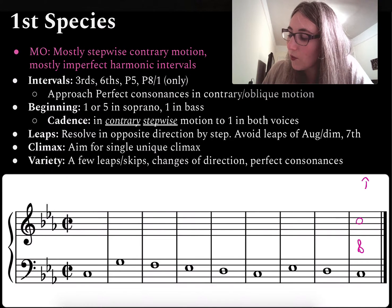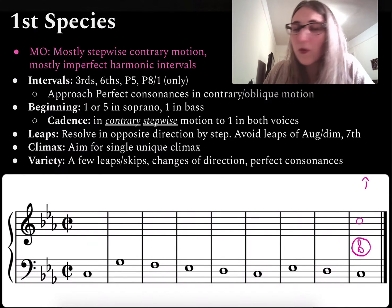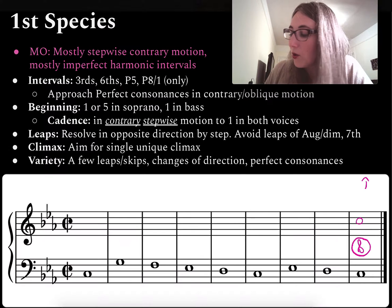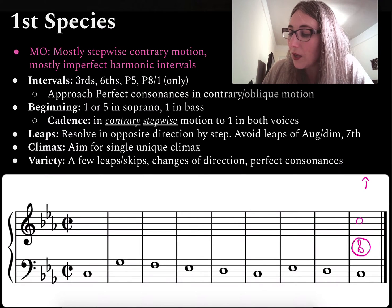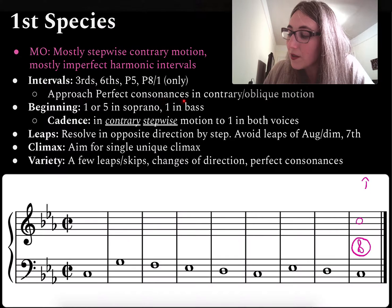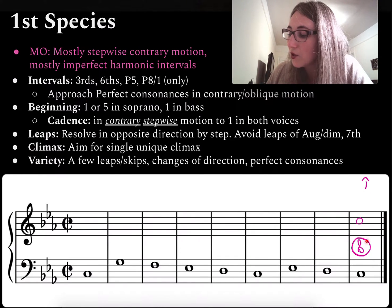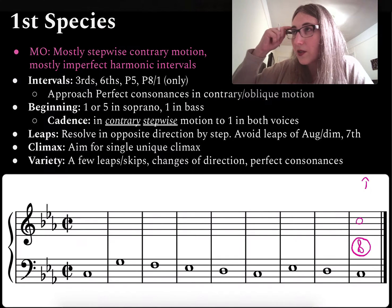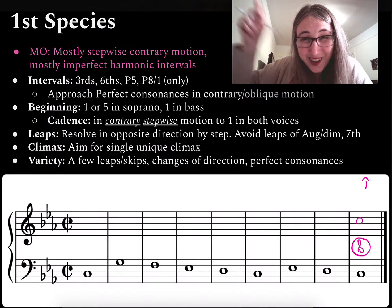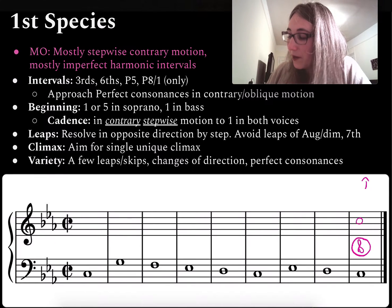As a general rule, I always circle my perfect consonances as I go along. That reminds me that all perfect consonances need to be approached in contrary or oblique motion. So every time I circle one, it forces me to think: I've got to make sure I approach this in contrary motion — or possibly oblique motion.